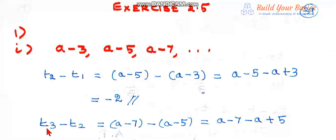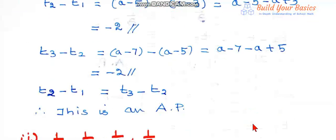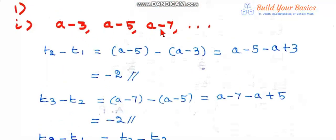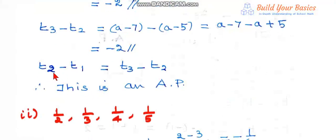Now third term minus second term, t3 minus t2, equals a minus 7 minus of a minus 5, that is a minus 7 minus a plus 5, that is minus 2. We have found t2 minus t1 and t3 minus t2. Since t2 minus t1 equals minus 2 and t3 minus t2 is also minus 2, therefore t2 minus t1 equals t3 minus t2, so this is an AP.